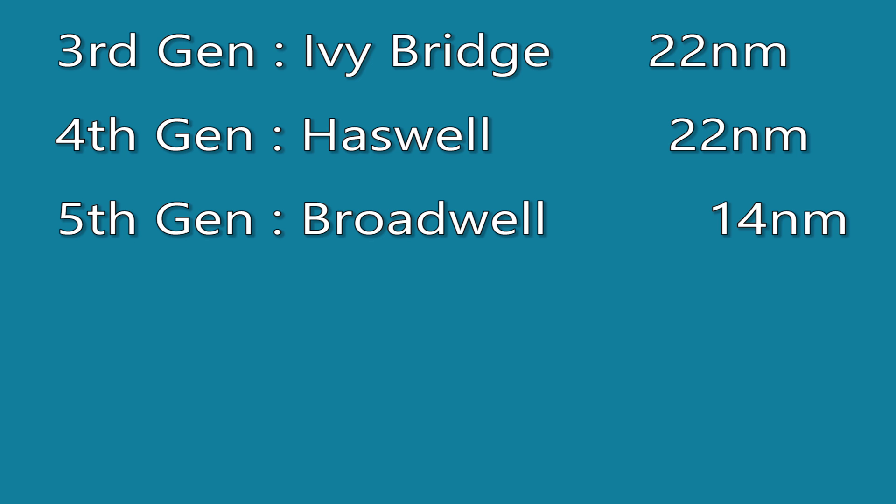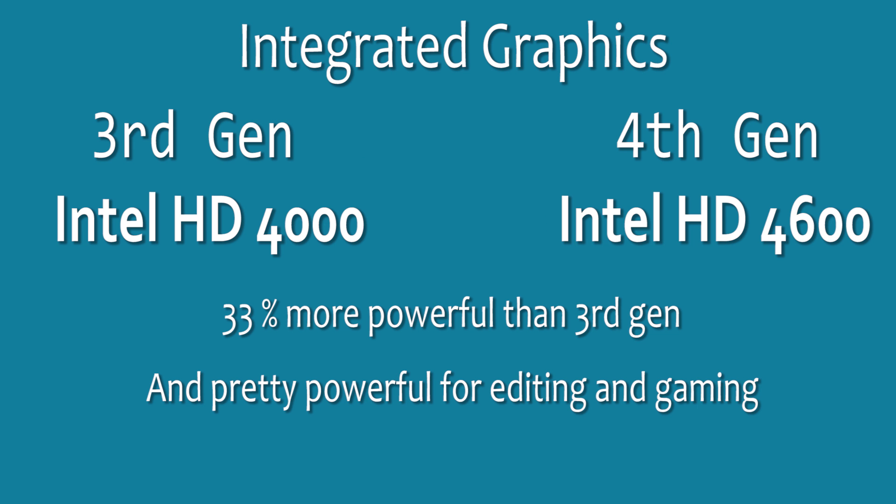The fourth-gen CPU also has 22-nanometer architecture but is designed to consume significantly less energy. The integrated graphics in fourth-gen CPUs is much more powerful — third-gen had Intel HD 4000, while fourth-gen has Intel HD 4600, which is roughly 33 percent more powerful. Using a fourth-gen Intel processor in a mobile device like a laptop, you will get tons of battery backup. If you got three or four hours with a third-gen Ivy Bridge CPU, you will get almost double — eight or nine hours — with fourth-gen Haswell processors.